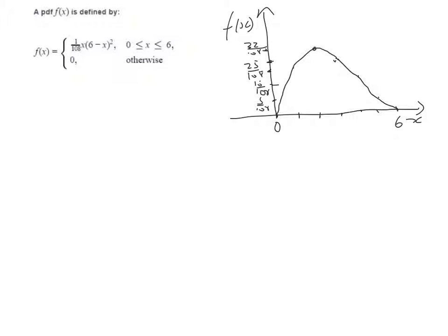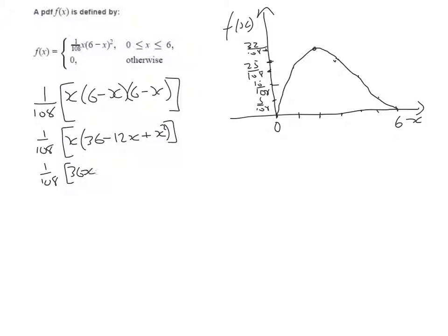Let's differentiate the function to find the turning point. I'm going to expand all of this, keeping the 1/108 out of it. We have x times (6-x) times (6-x). When we expand this, we get x times (36 - 12x + x²). Multiplying through by x, our function is 36x - 12x² + x³.